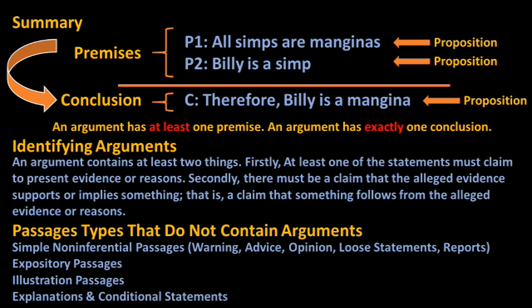However, you will also encounter a great number of passages that in themselves do not contain an argument. There are broadly five types of passages which do not contain arguments. These are simple non-inferential passages, which can further be broken down to warnings, pieces of advice, statements about beliefs or opinions, loosely associated statements, and reports. The other types of non-argumentative passages are expository passages, illustration passages, explanations, and conditional statements.